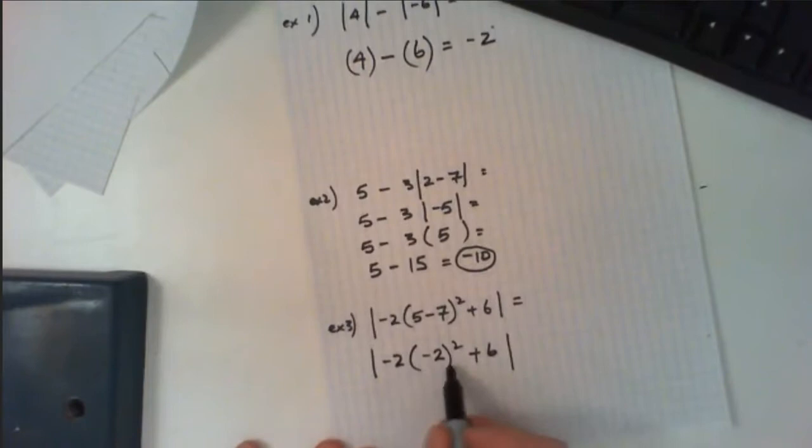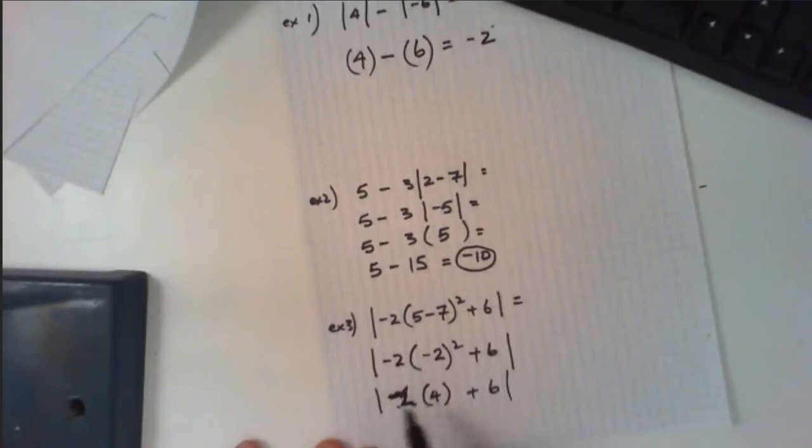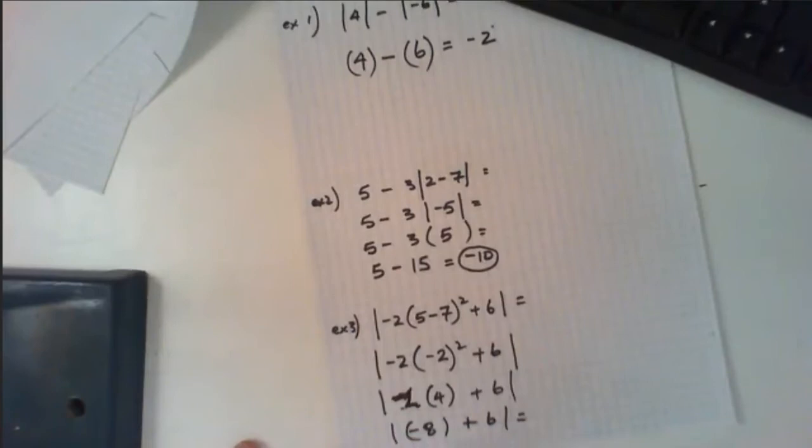Negative 2... negative 2 squared... sorry, negative 2 times 4 happens to be negative 8. This gives me the absolute value of negative 2, which is positive 2. That would be your final answer.